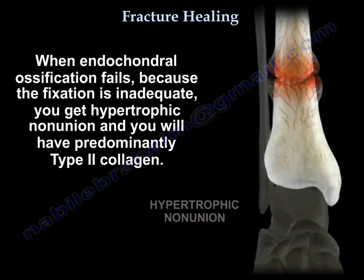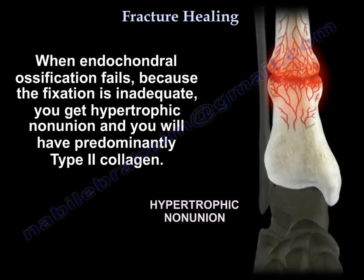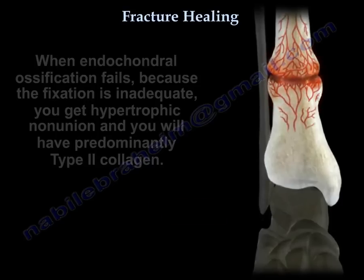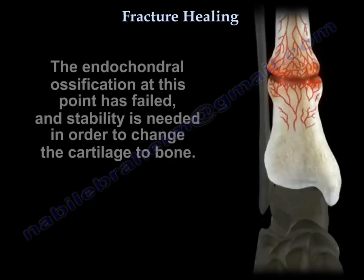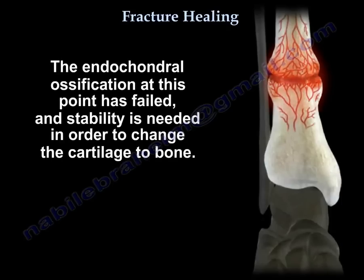When endochondral ossification fails because the fixation is inadequate, you get hypertrophic nonunion, and you will have predominantly type 2 collagen. The endochondral ossification has failed at this point and stability is needed in order to change the cartilage to bone.